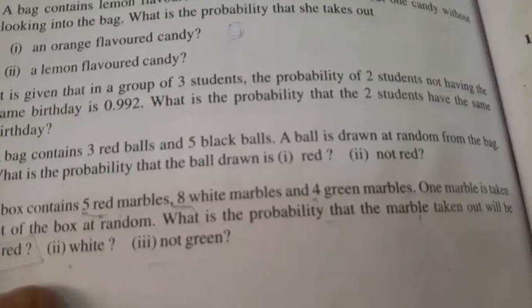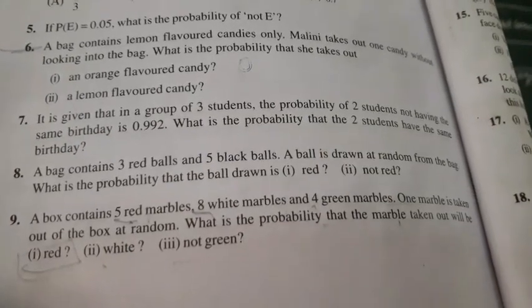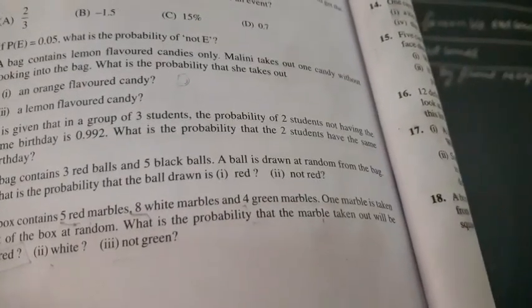Look at total marbles. This is total marbles. We add this. 8, 5, 13, 13 and 4, 17. Total 17 marbles. How do we do? Look at red marbles. How many red marbles? 5. So, 5 by 17. White, how do we do? 8 by 17.